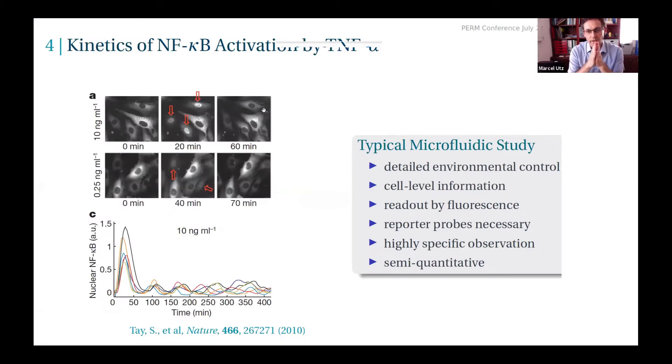In a typical microfluidic study, you get detailed environmental control over what you're looking at, and you get out information at the level of the individual cell, typically by fluorescence. That's a very highly specific observation—you're looking at one aspect of cellular metabolism picked up by whatever fluorescent probe you're using, and it's at best semi-quantitative. Usually you don't get millimolar or nanomolar information, you get information of a bit more or a bit less.